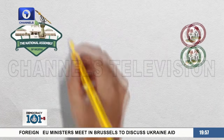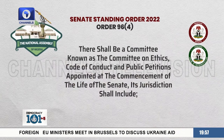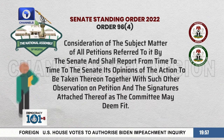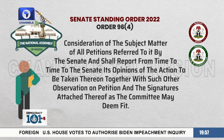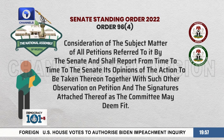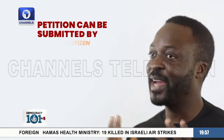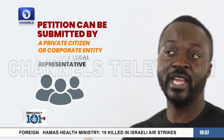According to Order 96-4 of the Senate Standing Order 2022, it states that there shall be a committee known as the Committee on Ethics, Code of Conduct, and Public Petitions, appointed at the commencement of the life of the Senate. Its jurisdiction shall include consideration of the subject matter of all petitions referred to it by the Senate or the House of Reps, and shall report from time to time its opinions on the actions to be taken, together with such other observations on petitions and the signatures attached thereof as the committee may deem fit. A petition can be submitted by either a private citizen or corporate entity through a legal representative.